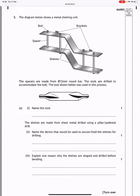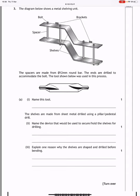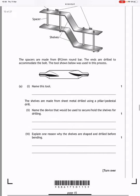The shelves are made from sheet metal drilled using a pillar or pedestal drill. Name the device that would be used to secure or hold the shelves for drilling. I imagine that would be an engineer's vice. Explain one reason why the shelves are shaped and drilled before bending. Well, you wouldn't be able to drill them if they're bent, much easier to drill them when they're flat.